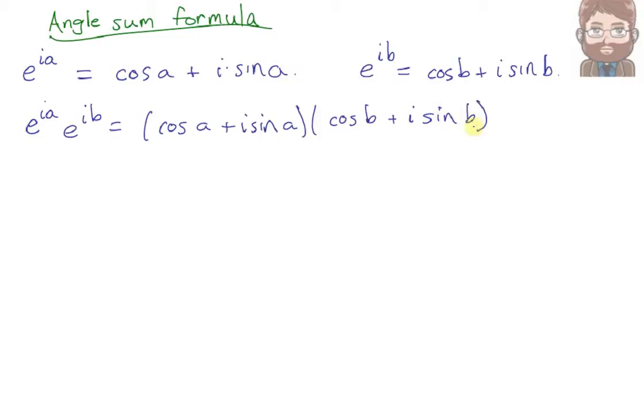On the left, we'll get cosine a times cosine b plus i squared is negative 1, so negative sine a sine b. Multiplying the interior terms and the exterior terms, both are going to have a factor of i.